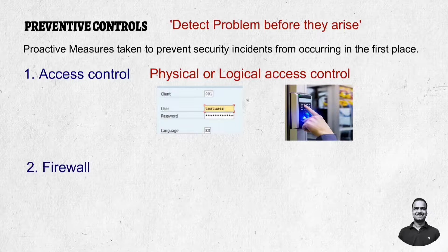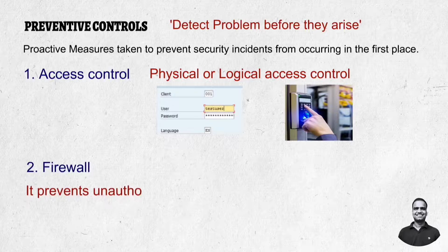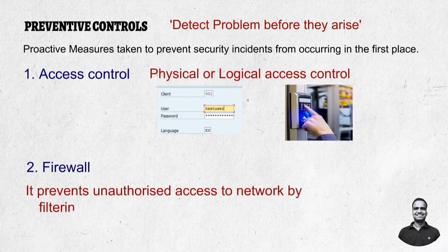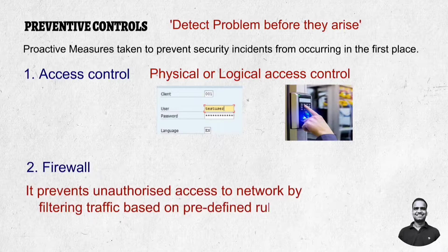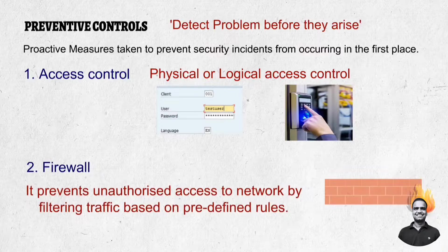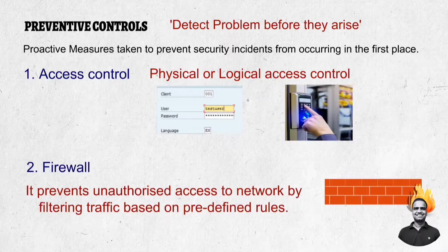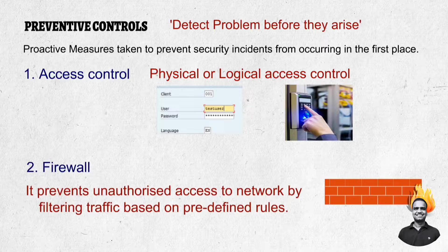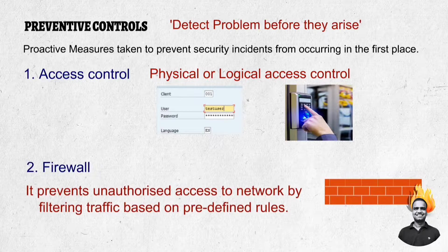The second preventive control is a firewall, designed to protect against unauthorized access to a network or system. By filtering network traffic based on predefined rules, a firewall can prevent unauthorized access attempts from reaching the network and reduce the risk of a successful attack. So a firewall is also a preventive control.